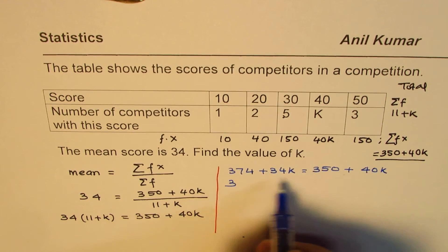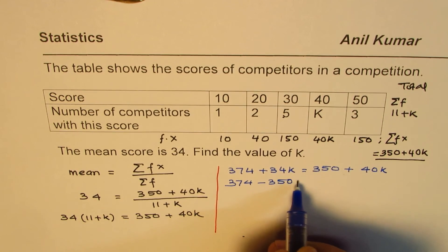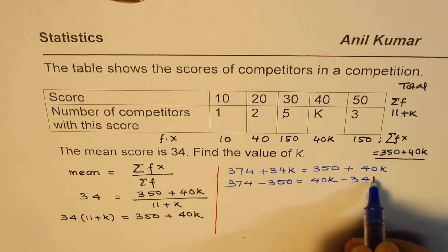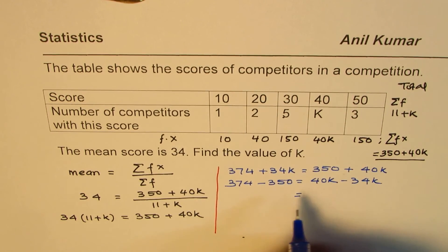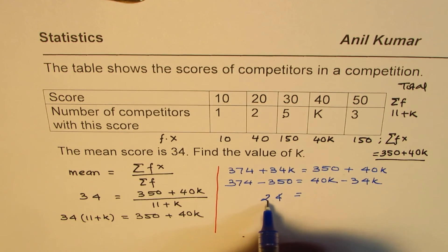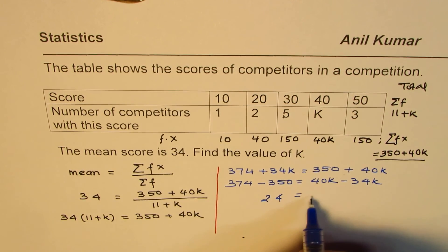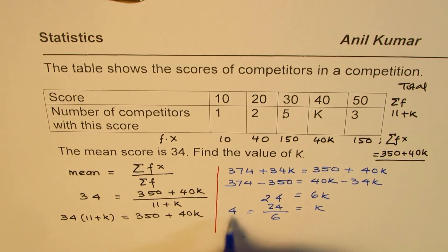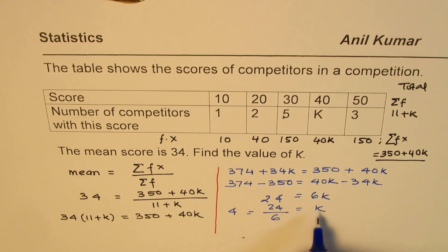So rearrange 374 minus 350 equals to 40K minus 34K and that gives us 24 and 6K and therefore K is equals to 24 divided by 6, 6 times 4 is 24. So we get the value of K as equals to 4.